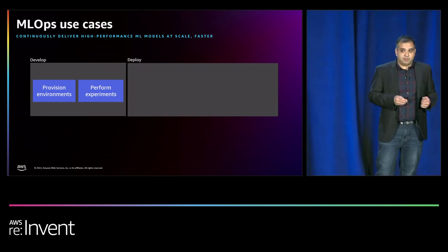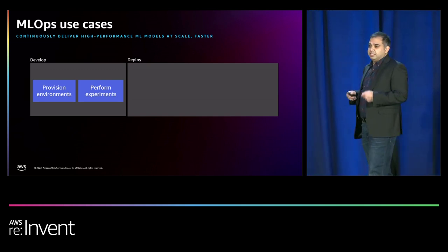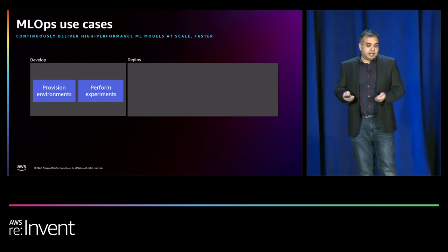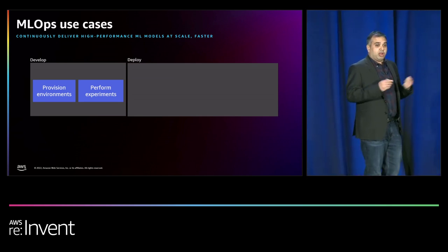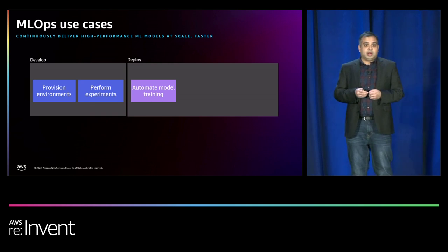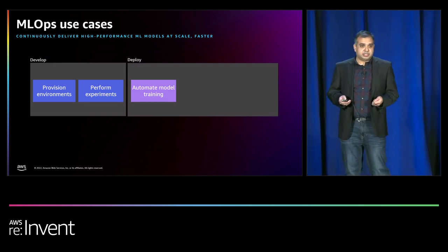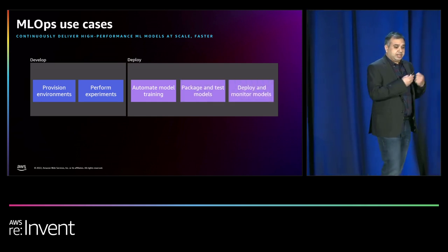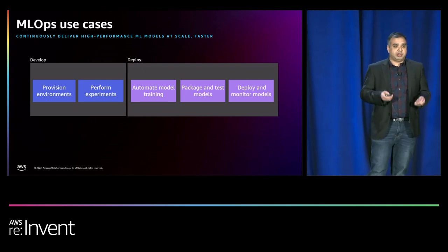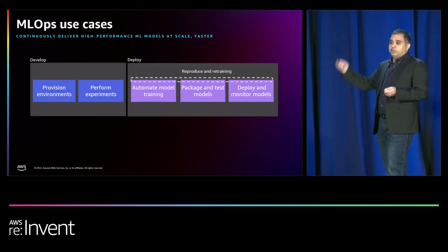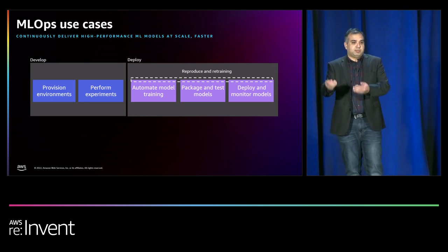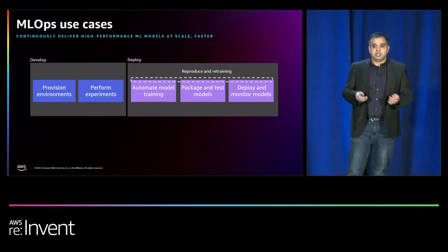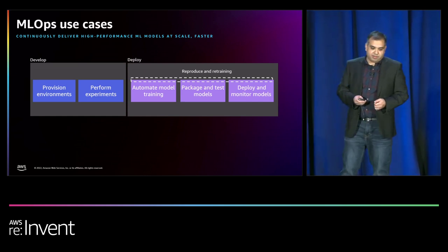On the development side, we see a lot of customers interested in making it easy to provision environments for their data scientists to help them get started quickly, and standardizing how they perform experiments. On the deployment side, we see ML engineers developing pipelines that can help retrain the models in production, packaging and testing models, and monitoring them on a continuous basis. A lot of our customers want to close the loop — taking results from the monitoring system to retrain models on an ongoing basis, and tracking end-to-end lineage of the model.